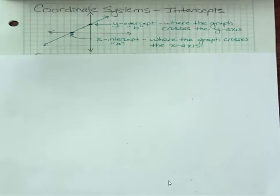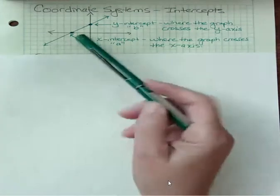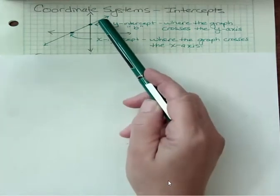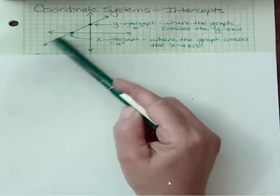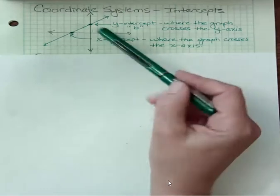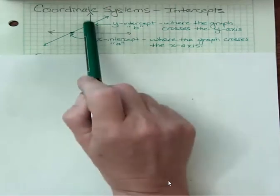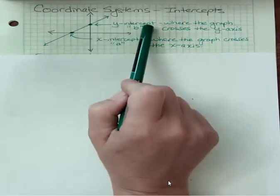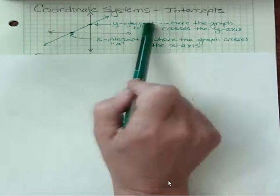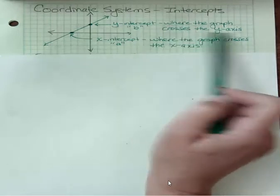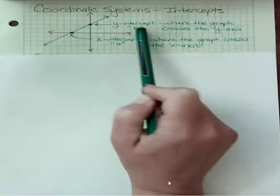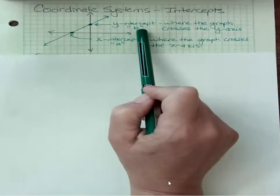Probably the one we talk about the most is the y-intercept. If we have a graph of a linear equation, that's a picture of the solutions. Where it crosses the y-axis is its y-intercept. So a y-intercept is just where the graph crosses the y-axis, and we abbreviate y-intercept with the lowercase letter b.